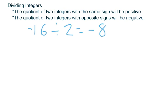Now, sorry about the interruption there. Let's say we have a negative 14 divided by a negative 7. Negative 14 divided by negative 7. We have a negative number divided by a negative number. Quotient of two integers with the same sign will be positive.